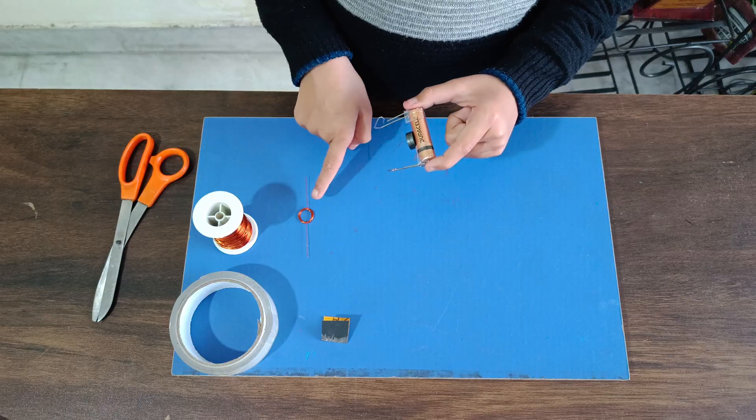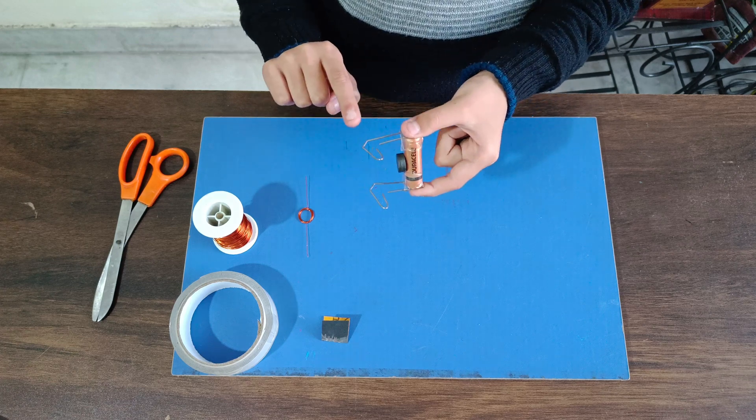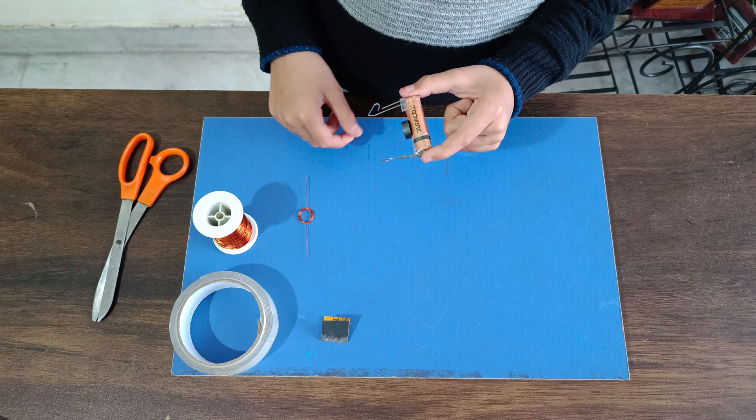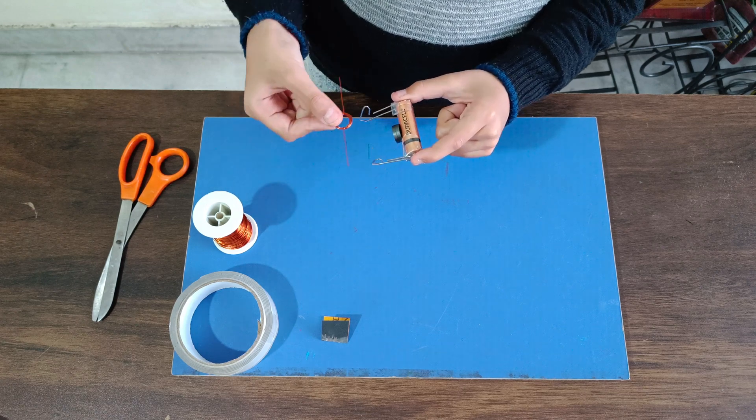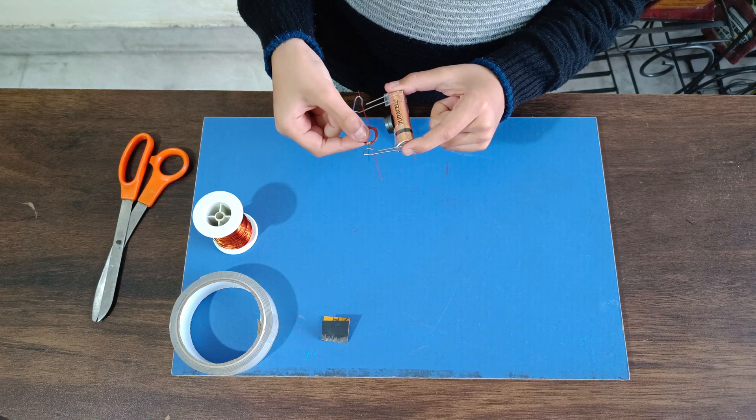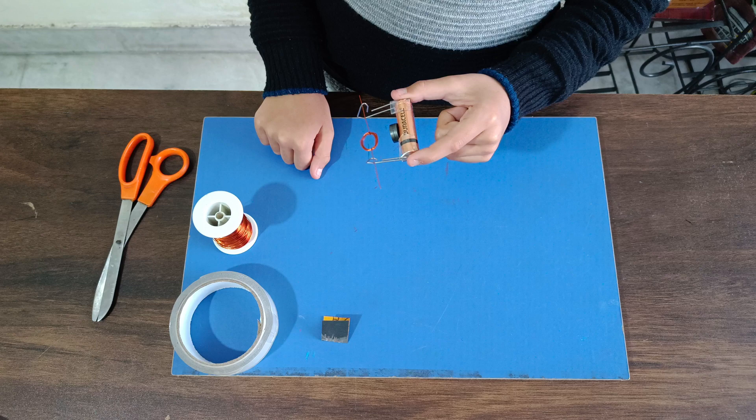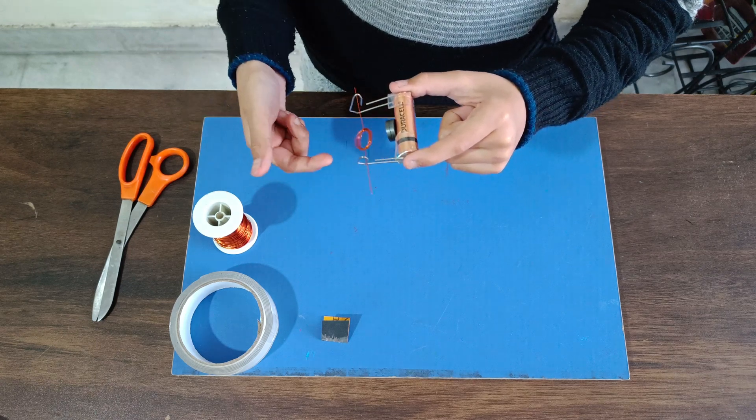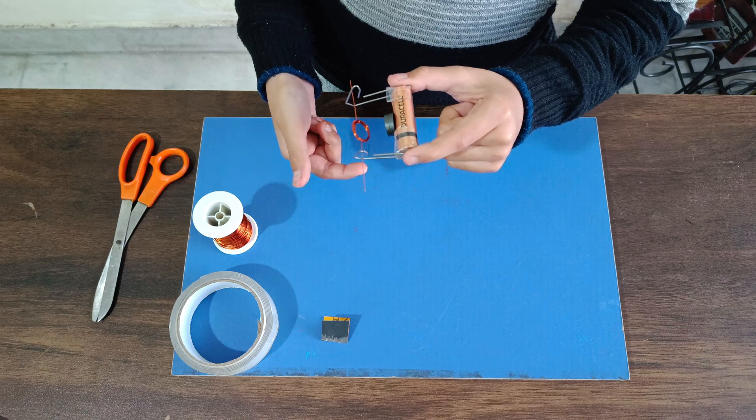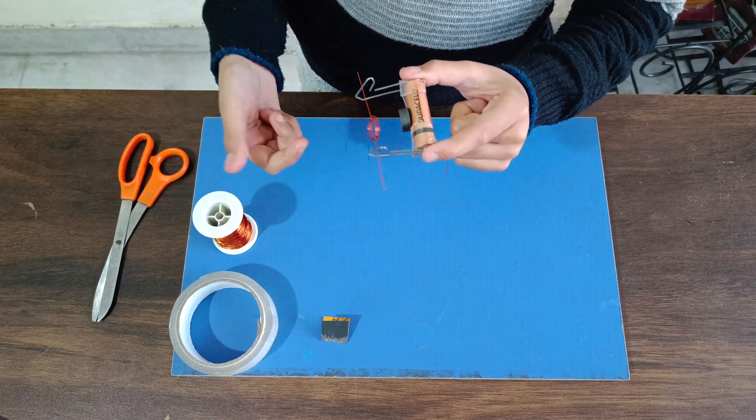Our motor is almost ready. We will put our coil on these paper clips such that two long ends touch these paper clips. As soon as you put the coil, you could see it starts moving back and forth. Sometimes, to make the motor work, we have to give it a gentle push to rotate and then it keeps rotating itself.